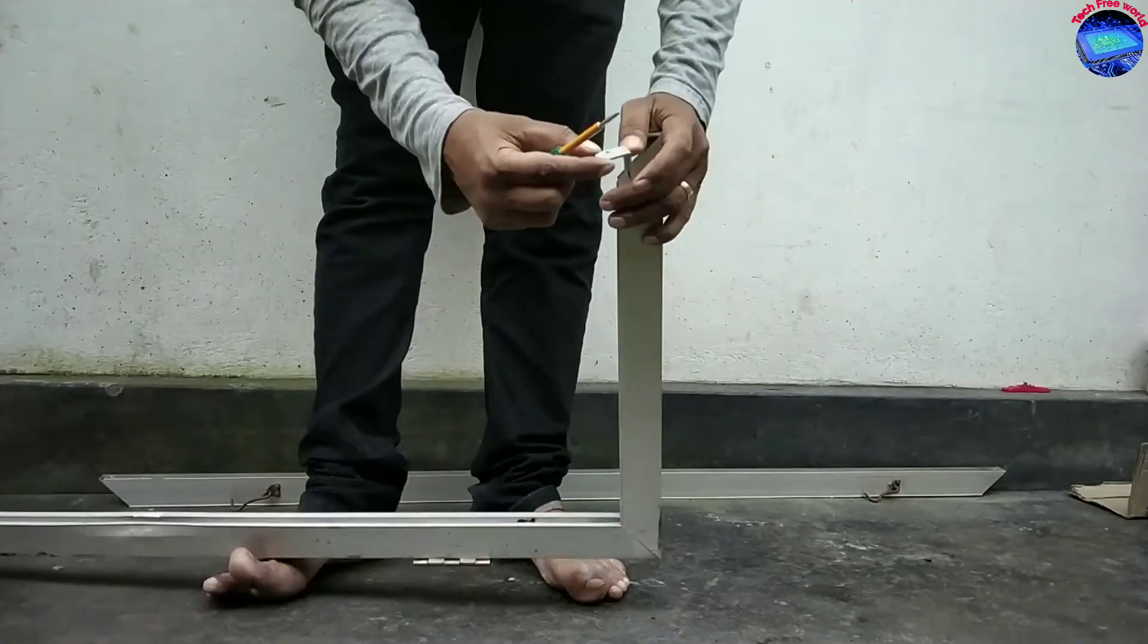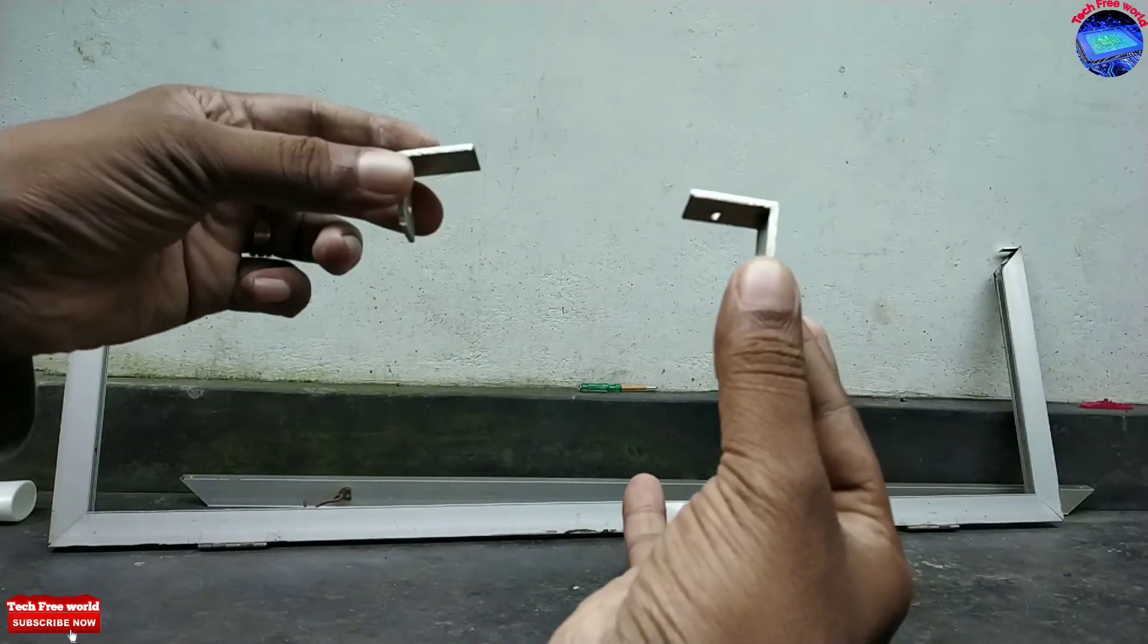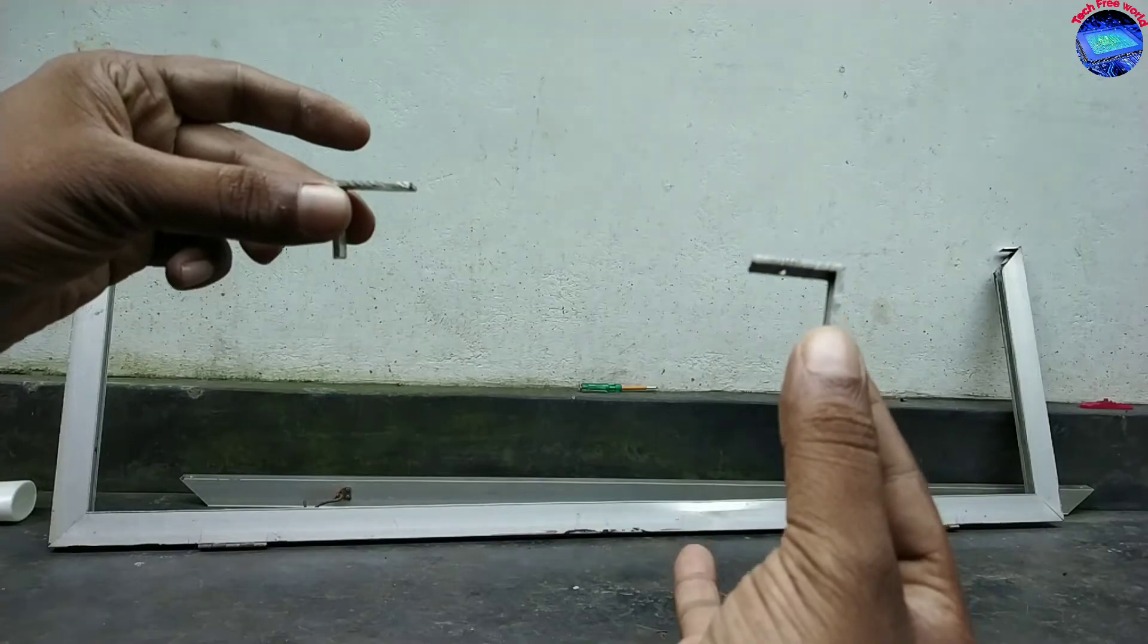This clip is for holding glass. At last, we need to fix back the aluminum portion of the window. So these clips are optional.